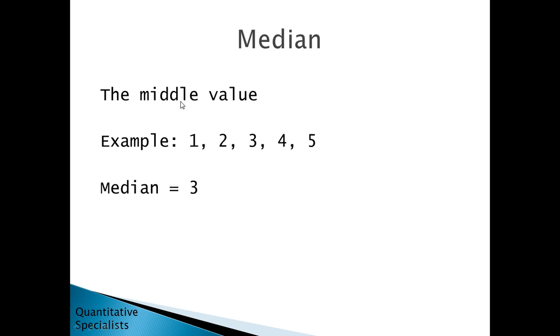Next we'll look at the median. The median is the middle value. If we have the values 1, 2, 3, 4, and 5, the middle value here if we count in is just the center one, which is a value of 3. Therefore in this example the median is equal to 3.